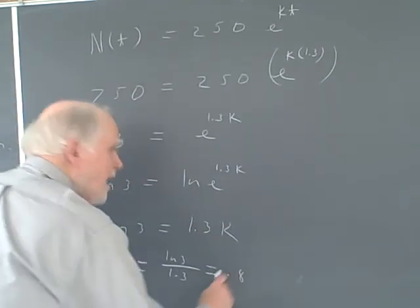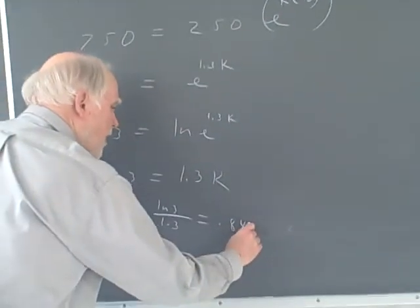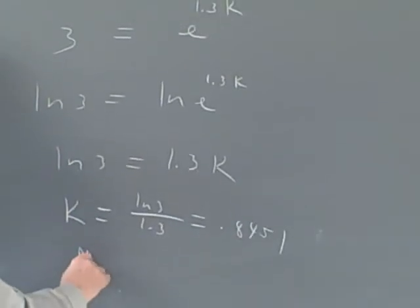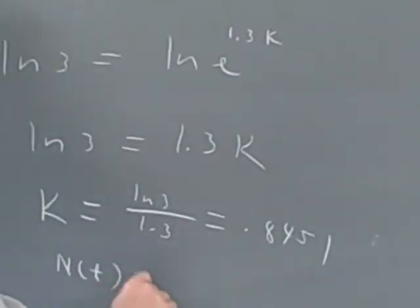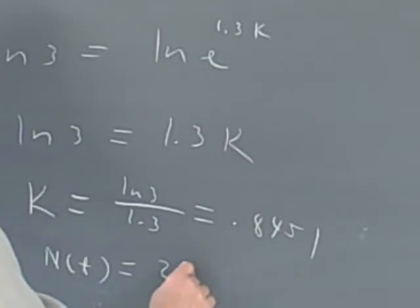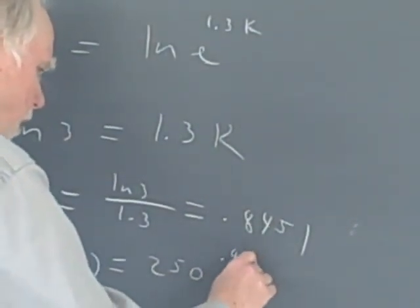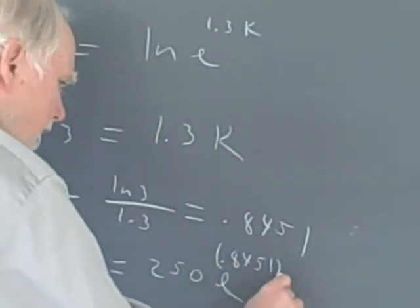When I put it in my calculator, I get 0.8451. So now I know that my number at time t equals exactly what we already knew: 250 times e to the 0.8451t.